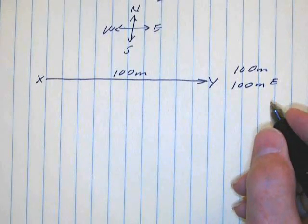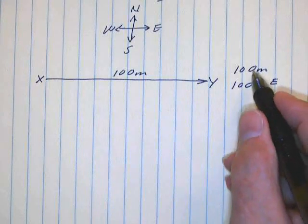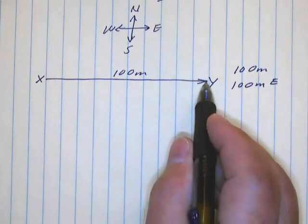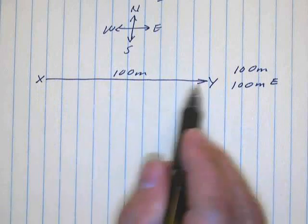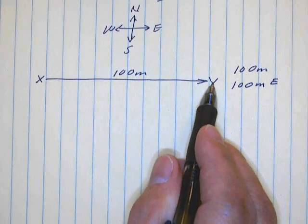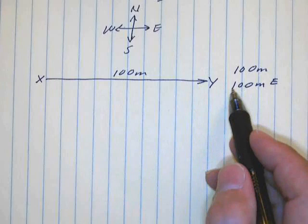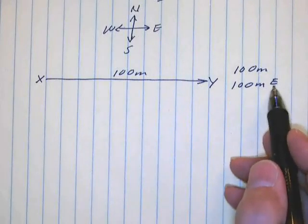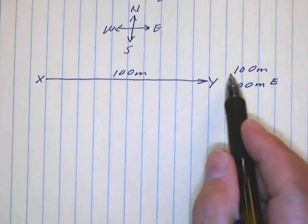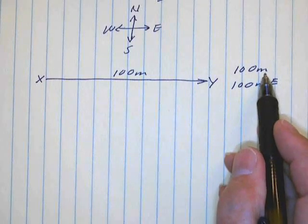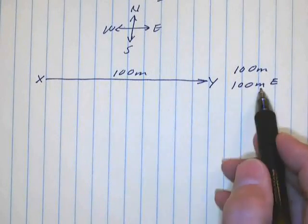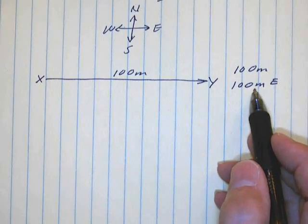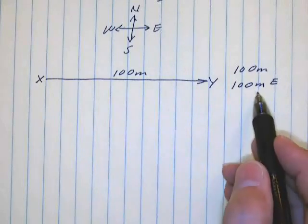The difference between distance and displacement: distance is the length of the path that you travel. Displacement is the distance and direction between the starting point and the ending point. Displacement has a distance and a direction. That means distance is what's referred to as a scalar quantity — it only has a measurement, only a quantity, no direction. But displacement is referred to as a vector quantity; it has a direction, unlike distance.